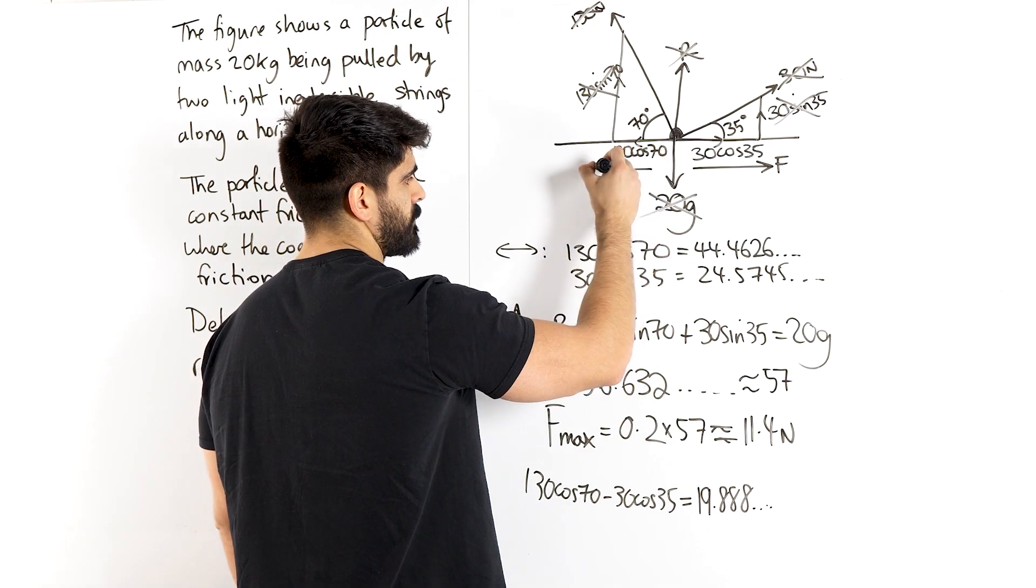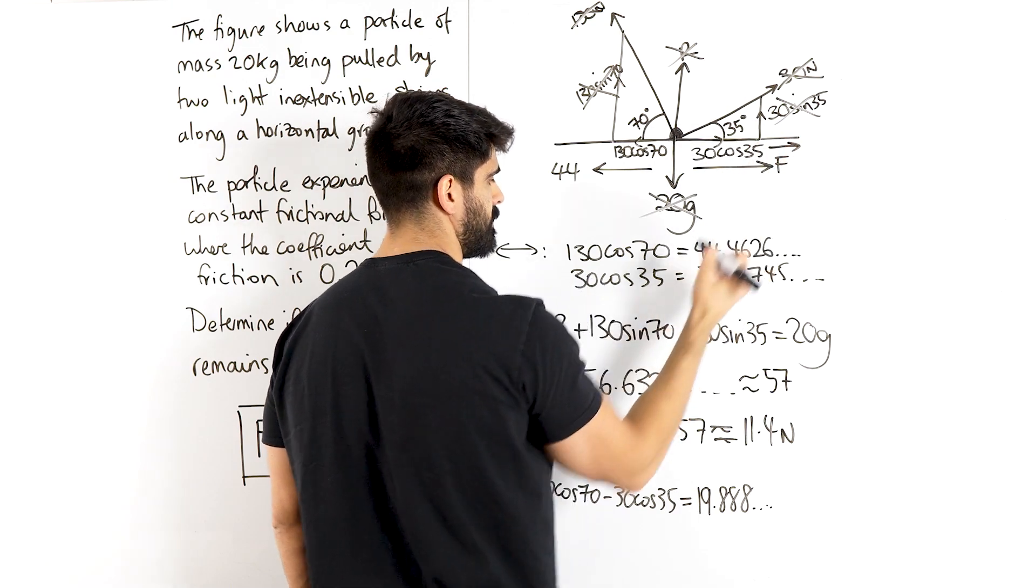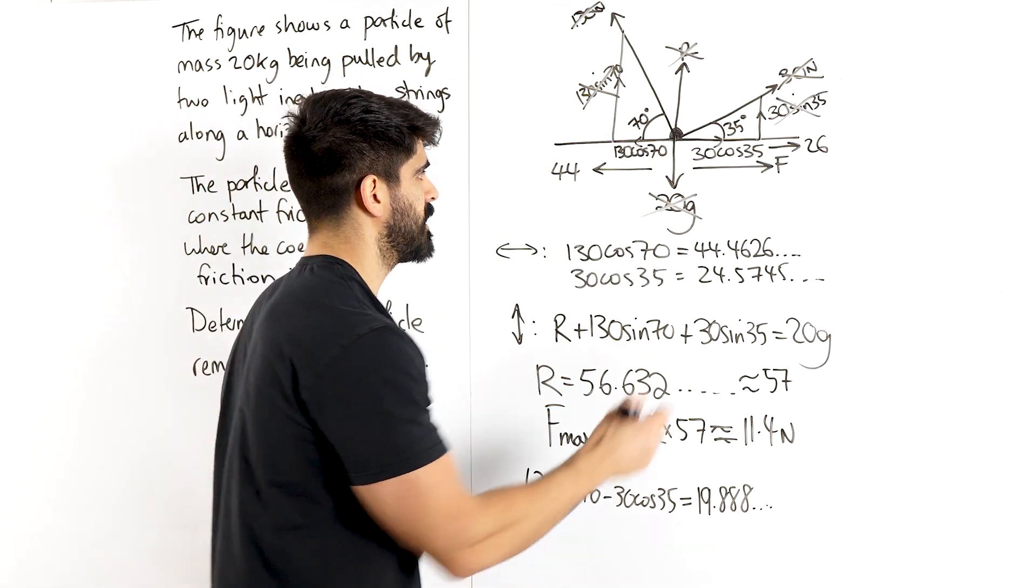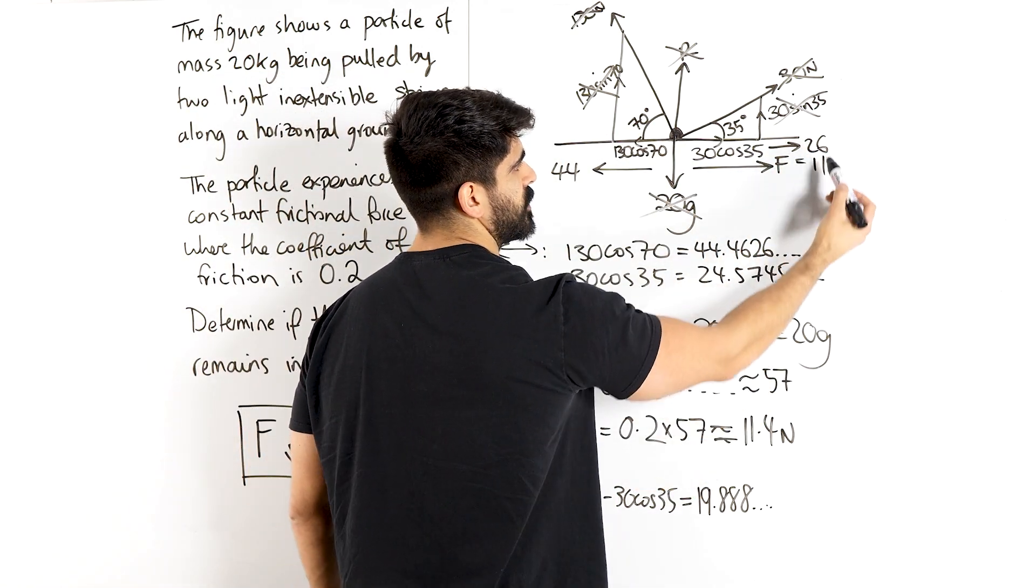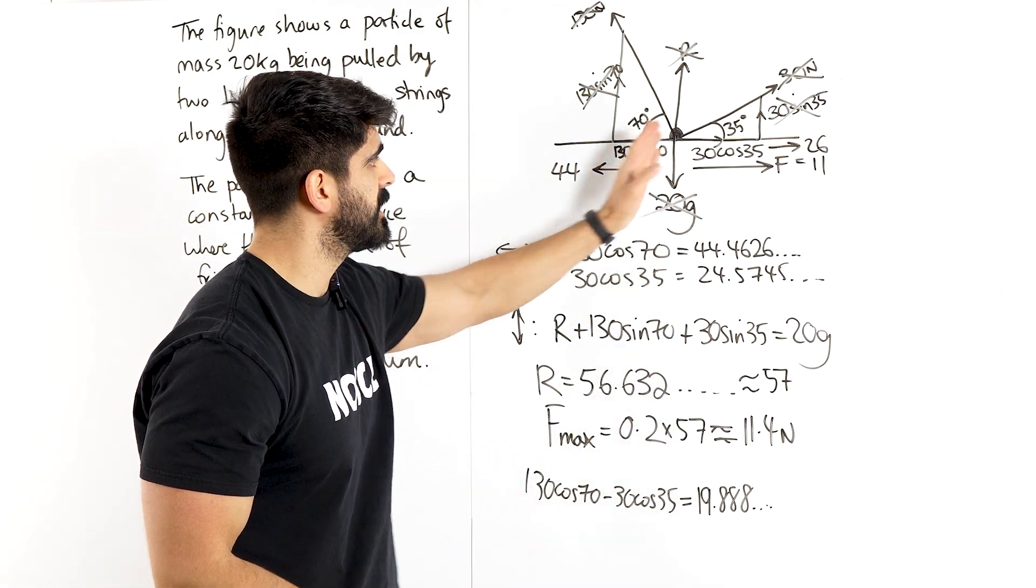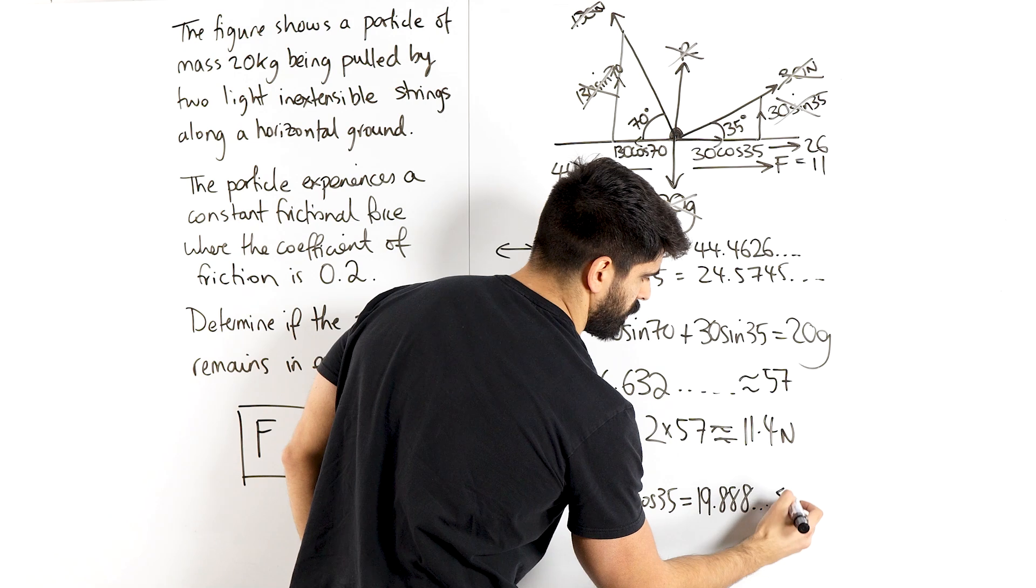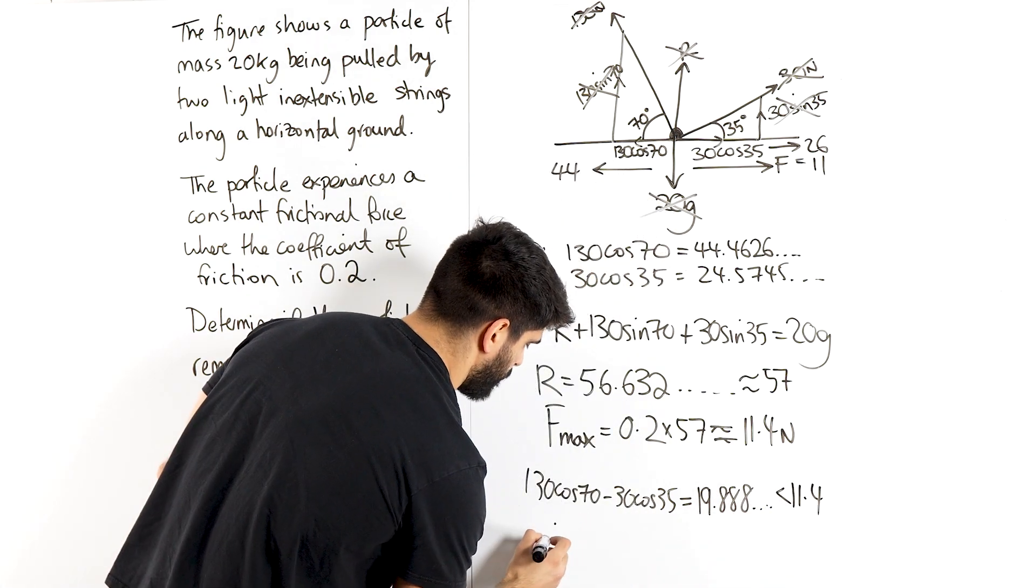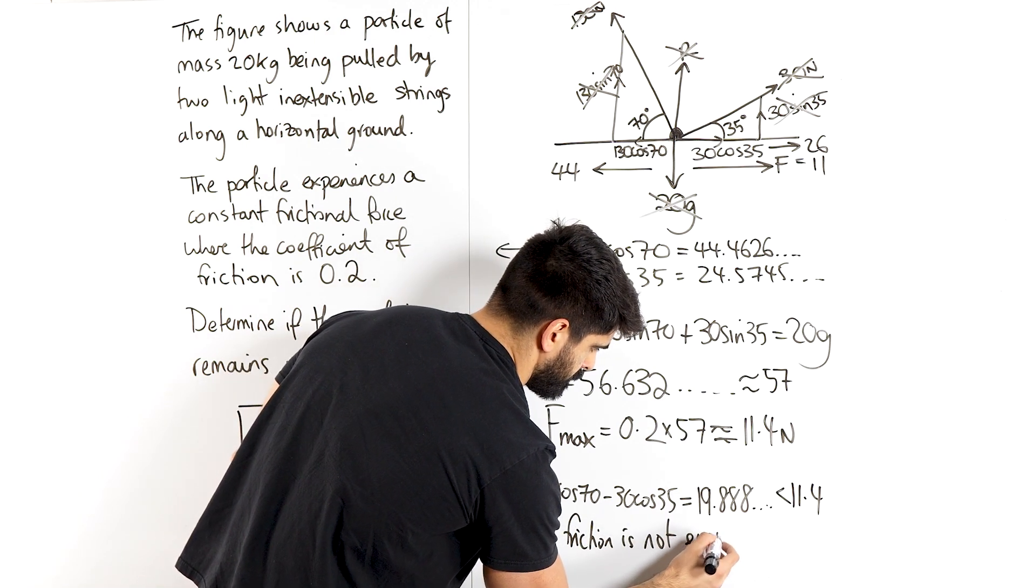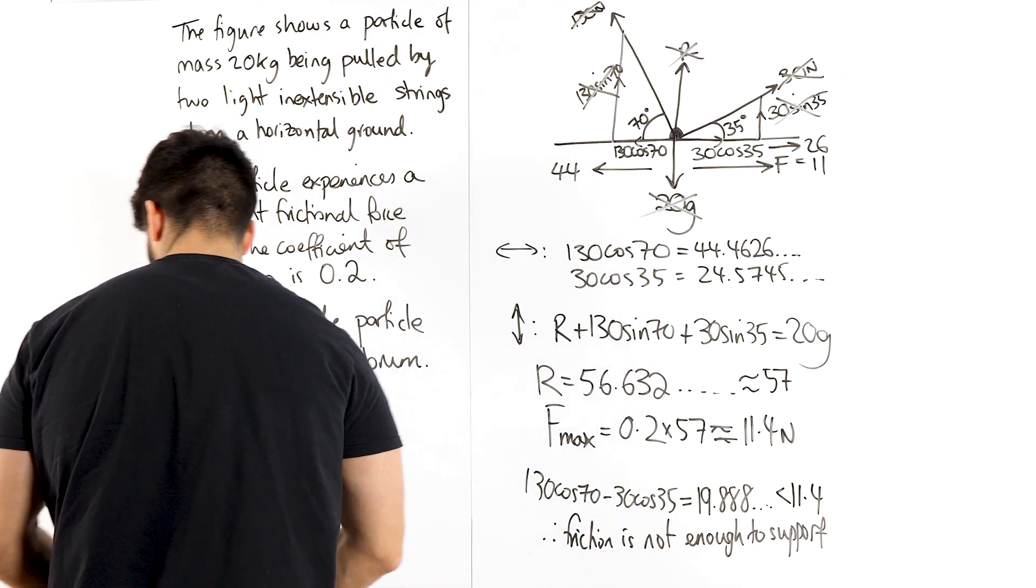So you basically have, just to keep numbers simple for you guys to see, just say this is 44. And this value here is, just say 26. The difference between the two, this F being about 11, is not enough. Because 26 plus 11 is 37. 37 is smaller than this. So it means that the particle is just going to move. Because the maximum value of friction is not enough to counter this. So we're going to say this is smaller than 11.4. Therefore, friction is not enough to support or to keep the particle in equilibrium.